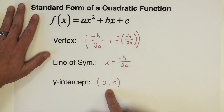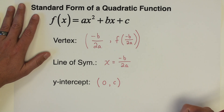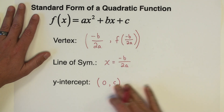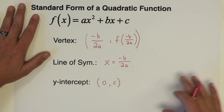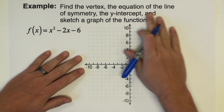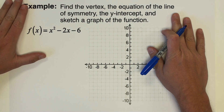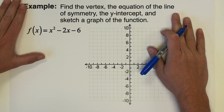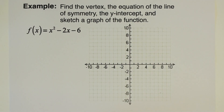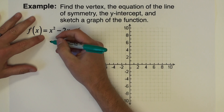It's so easy to find, it would be a shame not to use it. Let's do a couple of example problems, running through this whole process and then sketching the graph of the function. The directions are to find the vertex, the equation of the line of symmetry, and the y-intercept — and we're also going to graph the function. We're going to begin by finding the vertex.